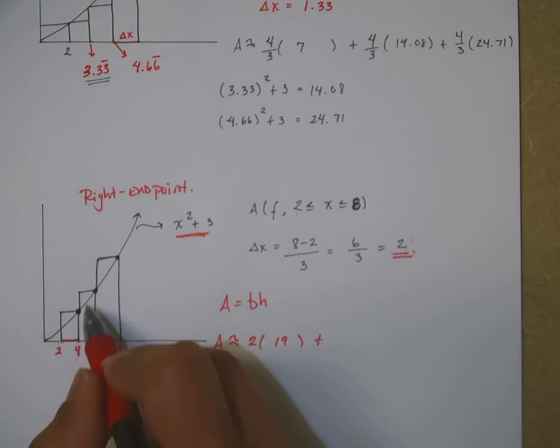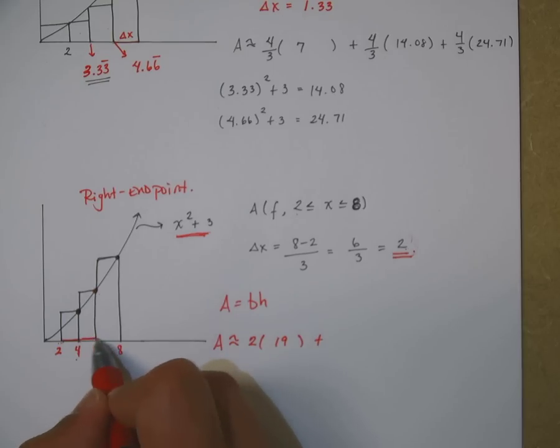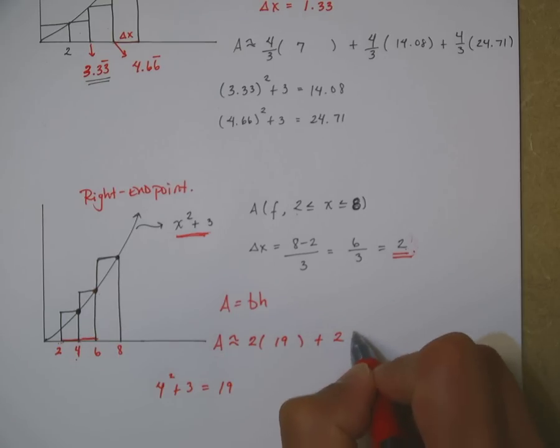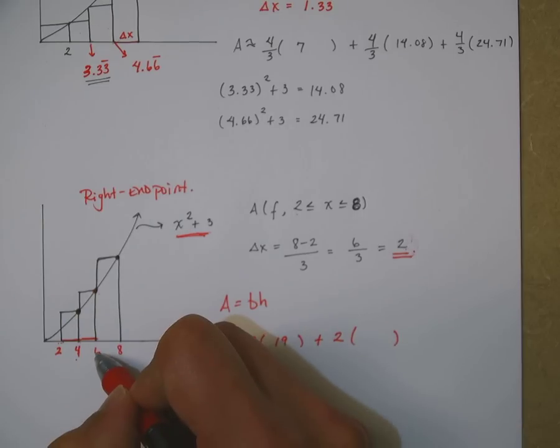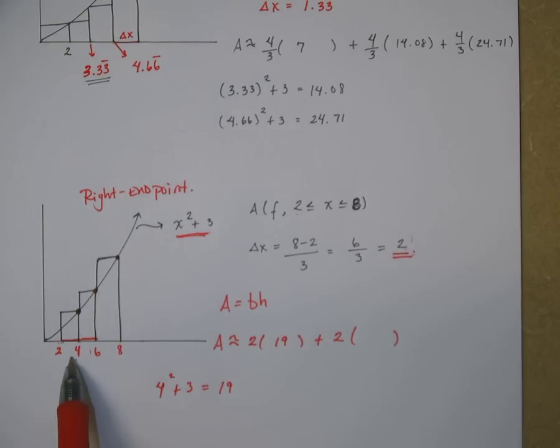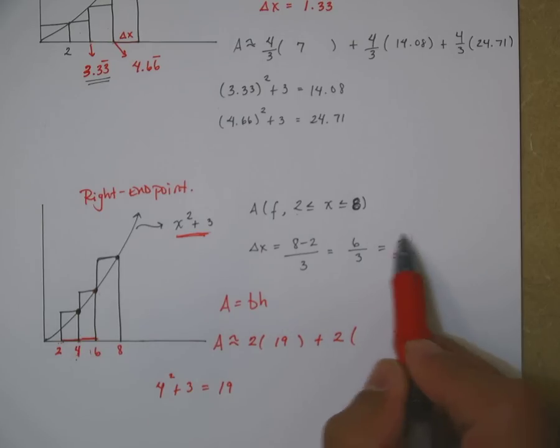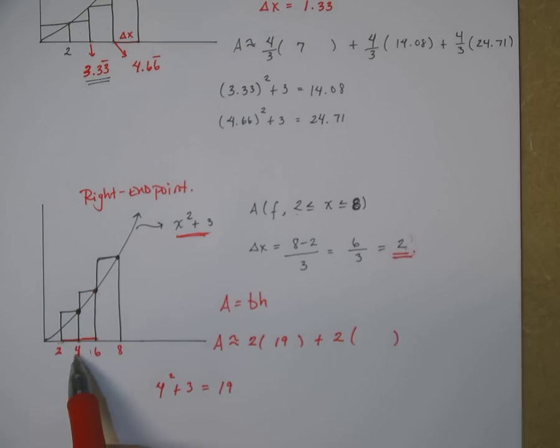Now we go to the next rectangle. What's my delta x? Same thing, it's 2. What's the height? Well you have to find the height at 6. How do I know what x value to plug in? You just keep adding your delta x's. So then it becomes 6. Plug in the 6. 6 squared plus 3, that's gonna give us 39.